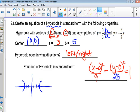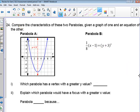All right. Number 24 is, I think, the last one on conics, isn't it? Compare the characteristics of these two parabolas given a graph of one and an equation of the other. Which parabola has a vertex with a greater y value? So, this one talks about vertex. Which parabola would have a focus with a greater x value? This sounds really complicated, but I don't think it's as bad as it seems.